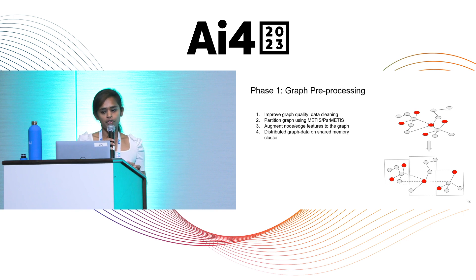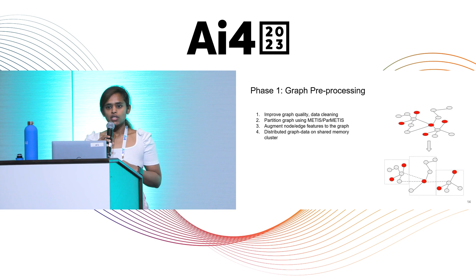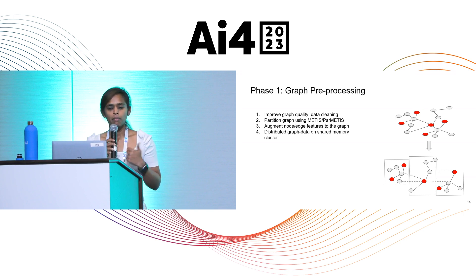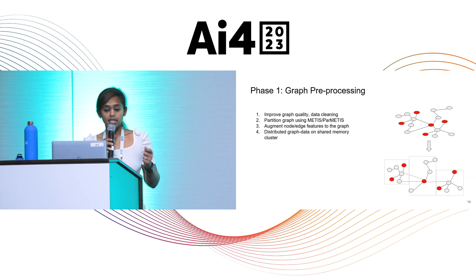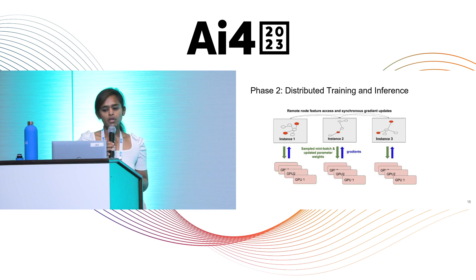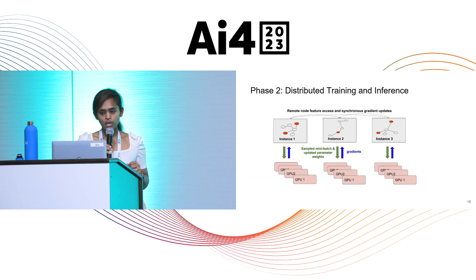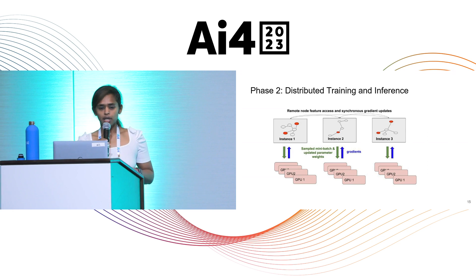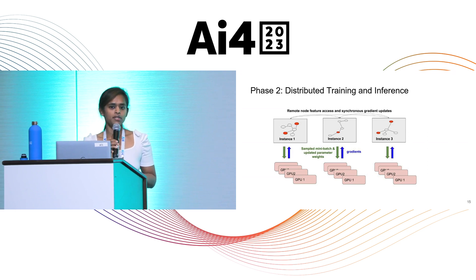There are two phases for training graph neural networks. The first is preprocessing: we cut the graph into multiple pieces to fit resource constraints, then augment node and edge features. The features are task-dependent — for the task of recommending products given a query, we use metadata like price, product text, and reviews, which are augmented into the graph. The second is the distributed training and inference phase, with multiple instances each having multiple GPUs. We use CPUs to sample mini-batches and update parameter weights using GPUs. We use asynchronous gradient updates, meaning every instance has the same copy of the model so you don't use stale parameter values.